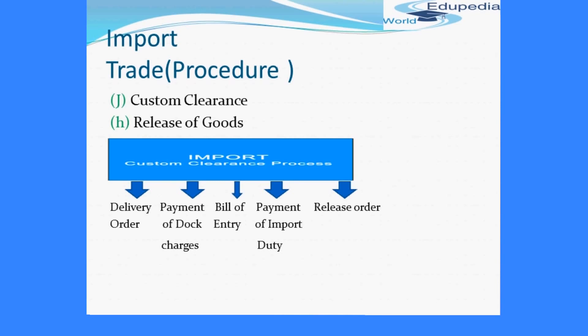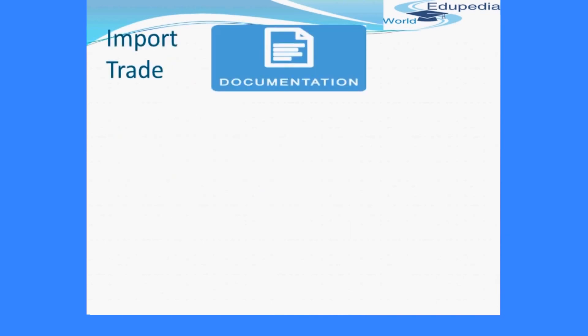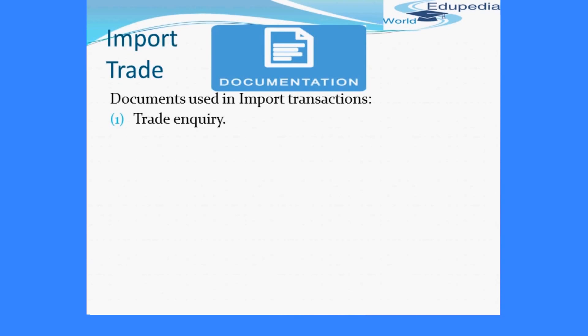Now let's see the documents used in import transactions. Number one is trade inquiry — a written request by the importer to the exporter for information regarding price, terms, and conditions of supply. Number two is the proforma invoice — a document containing detailed information regarding price, quality, rate, size, weight, and all other relevant conditions on which the export will take place.